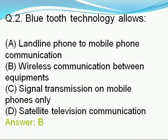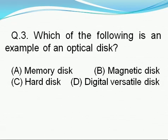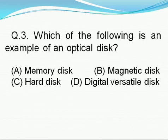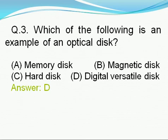Question number 3: Which of the following is an example of an optical disk? Option A: memory disk, option B: magnetic disk, option C: hard disk, option D: digital versatile disk. Right answer is D, i.e., digital versatile disk.